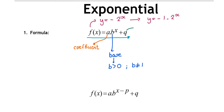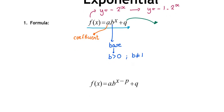Now let's remember what 'q' does. 'q' does the same thing it has done for all functions so far — it is a vertical translation, meaning whether the graph moved up or down. Just like with the parabola and the hyperbola, q is a vertical translation.